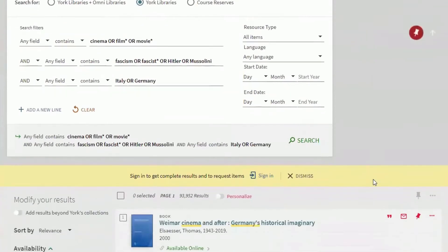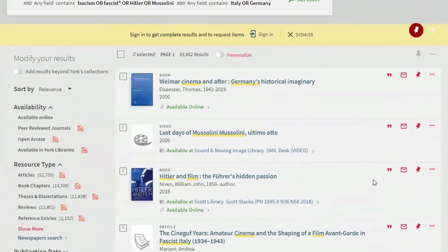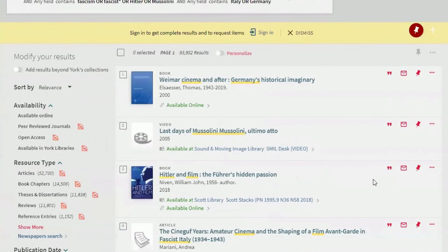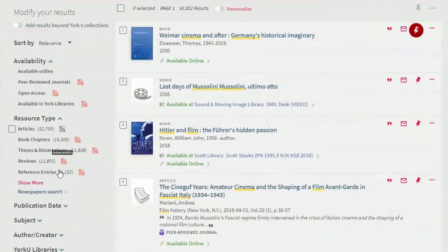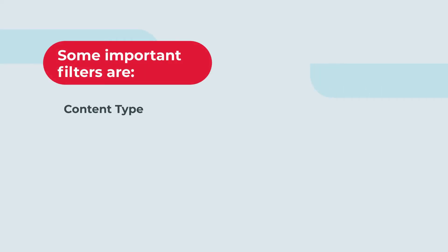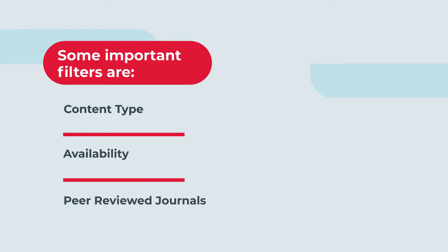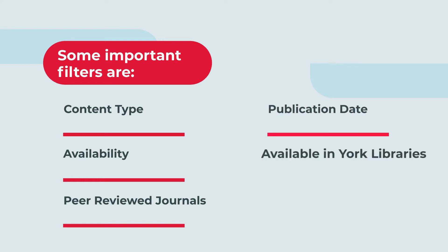There are over 90,000 results. You can sort through these results by using the filters on the left. Some important filters are content type, like books and e-books or articles, availability, peer-reviewed journals, publication date, and available in York libraries.